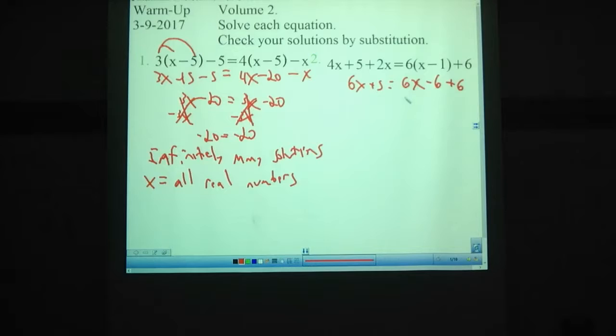We can combine, oh, those actually cancel each other out. We need to be able to stick with 6x + 5 = 6x. We can subtract 6x from each side, giving us 5 = 0, which those are not equal. Therefore, there are no solutions.